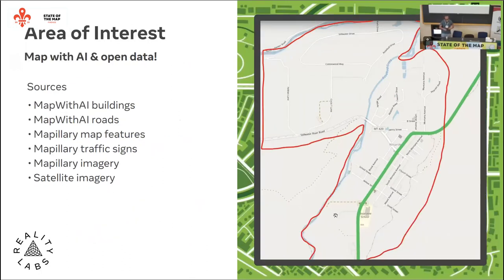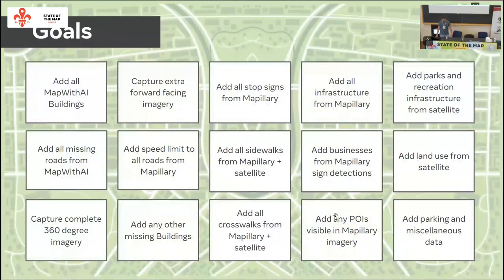I traced a line around the area defining the city boundary and looked at several data sources: Map with AI buildings (the Microsoft building dataset), the Map with AI roads dataset extracted from satellite imagery, Mapillary imagery, map features, traffic signs, and finally satellite imagery, which people rely on worldwide for tracing and adding to OpenStreetMap.